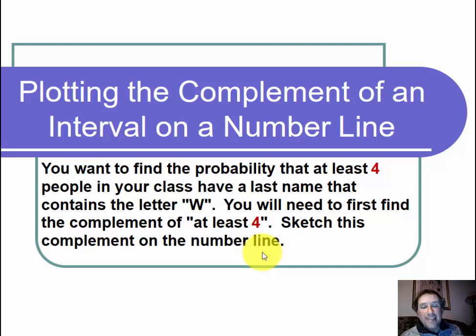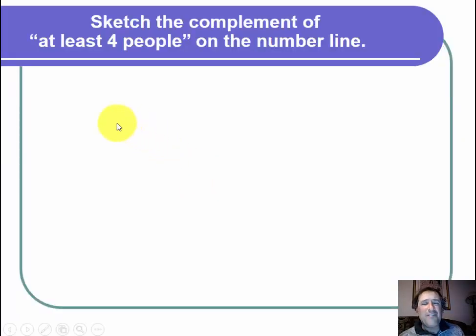Let's start out thinking about what it means to say at least four. The way I do that is I first just write down a bunch of numbers nearby four. I'm going to write down 0, 1, 2, 3, 4, 5, 6, 7, and 8.